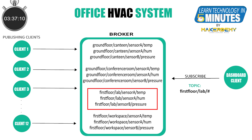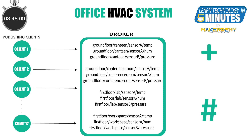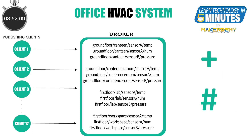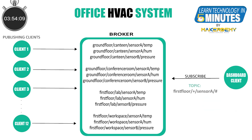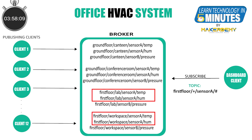When a client subscribes to a topic with a multi-level wildcard, it receives all messages under that level no matter how long or deep the topic hierarchy is. We can also combine single and multi-level wildcards for gaining more control over the subscriptions. For example, for the topic pattern given here, the client dashboard will be subscribed to all the temperature and humidity readings of both rooms in the first floor.